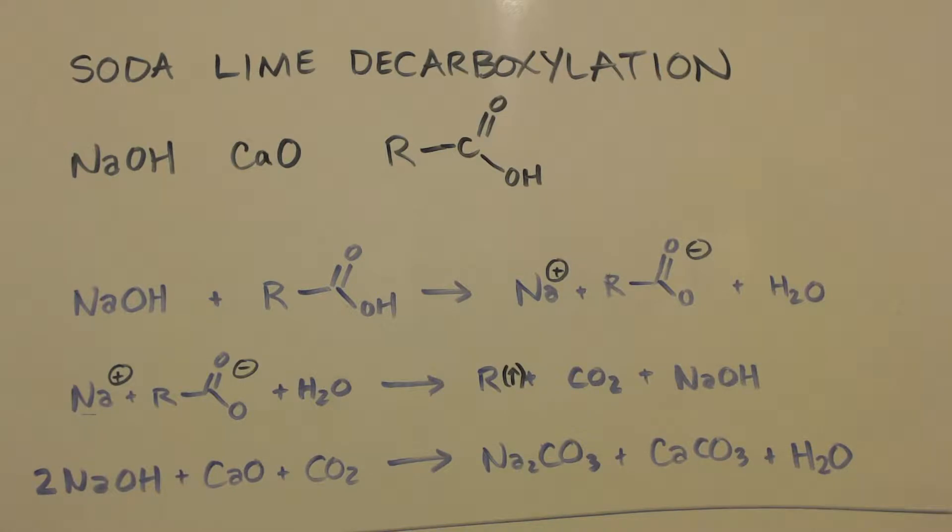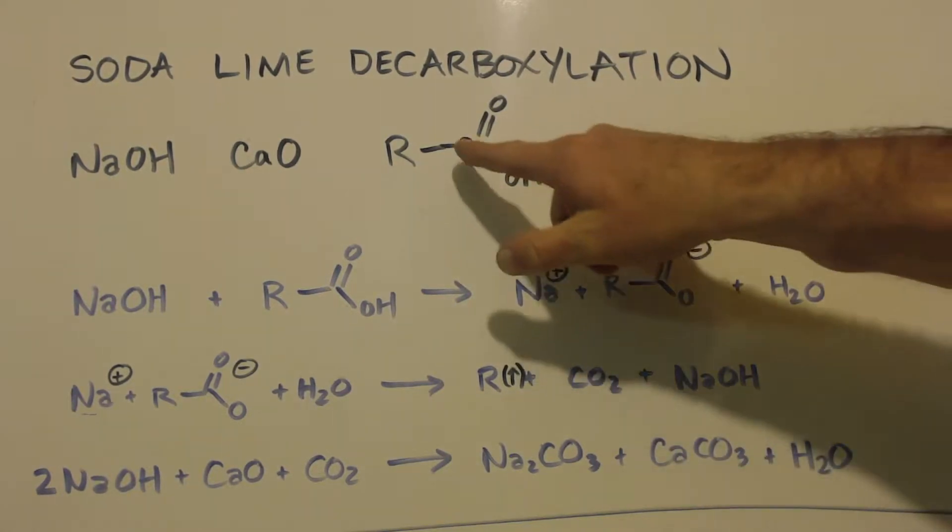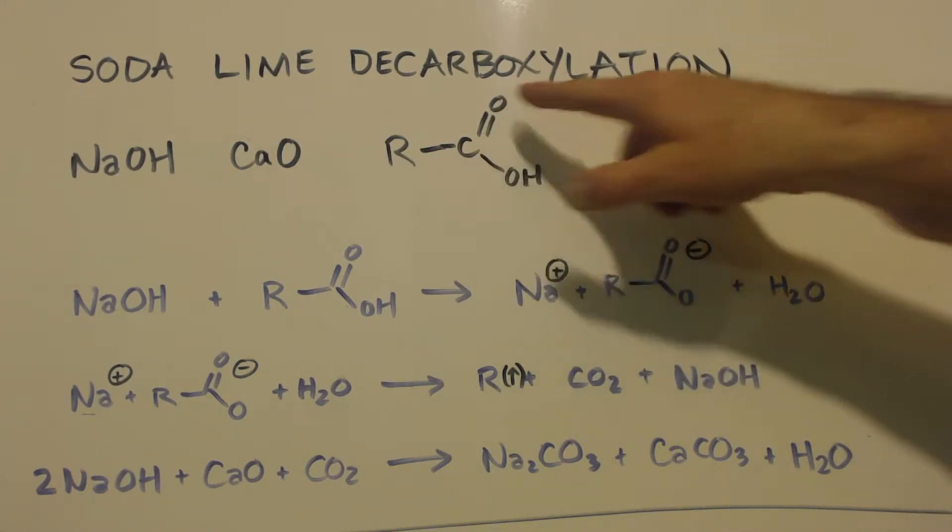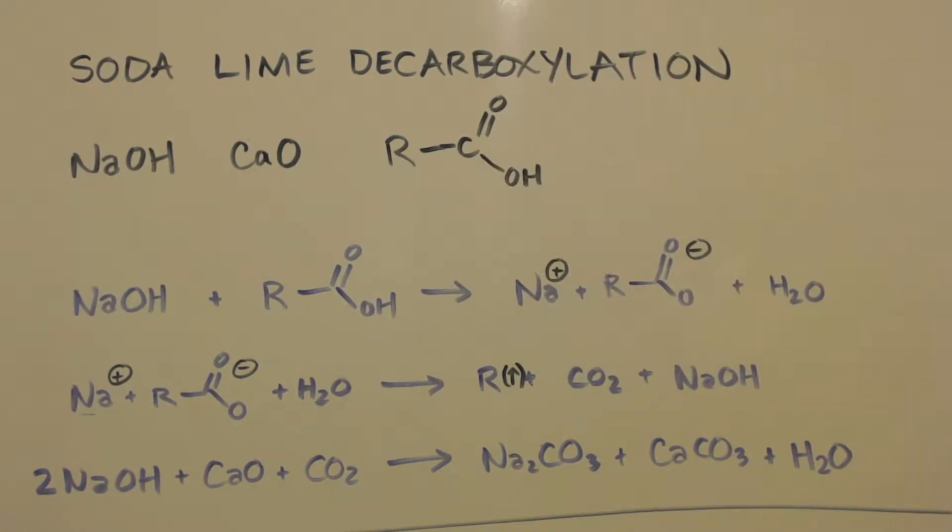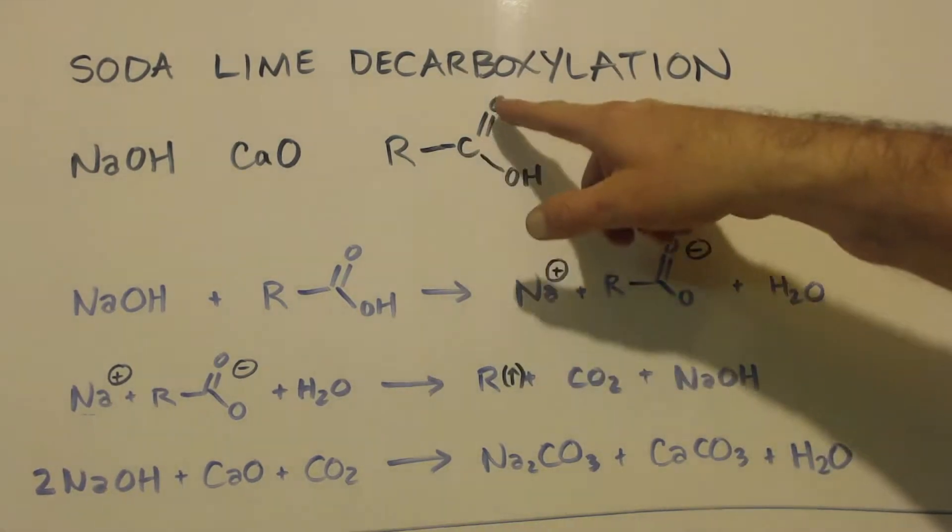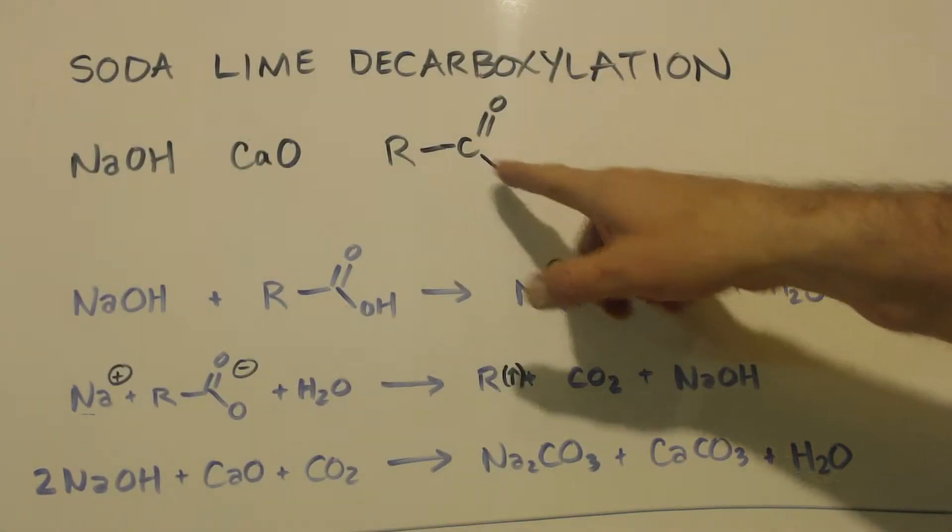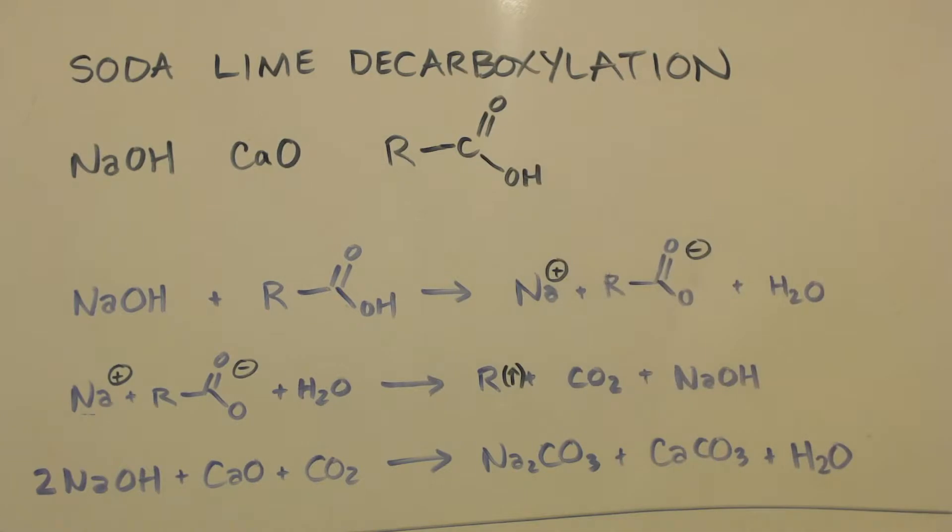Now, decarboxylation means you get rid of a carboxy group or a carboxyl group. This is a carboxyl group. It's what makes an organic acid. You've got your C, your carbonyl and your hydroxyl. If they're right next to each other and they're at the end like that, it's called a carboxy group.